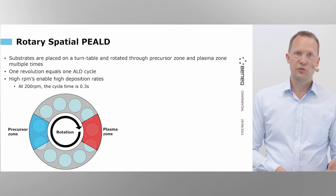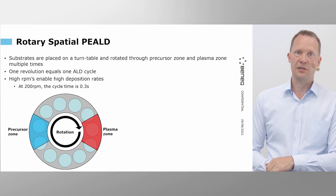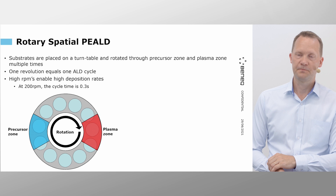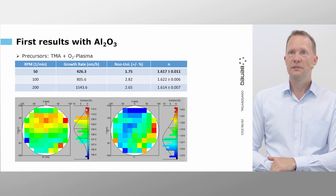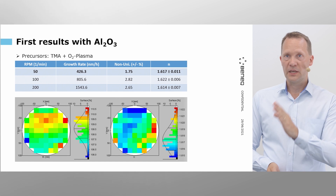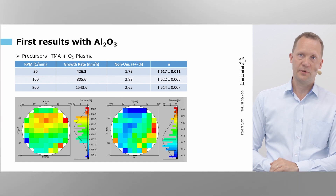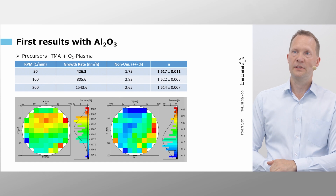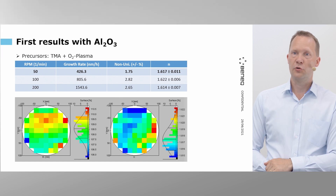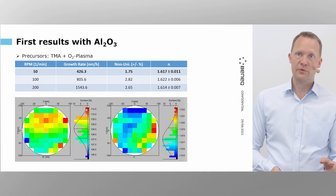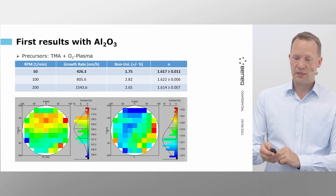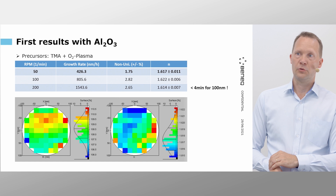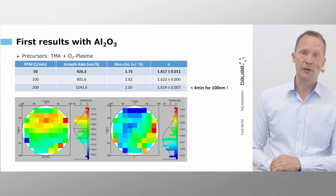As an example, at 200 RPM the ALD cycle time is 300 milliseconds. Some of the very first results with aluminum oxide show RPMs going from 50 to 100 and 200, with non-uniformity around 2% for the whole area. At 200 RPM we are at 1.5 microns per hour deposition rate, which in practice means it takes only less than four minutes to deposit 100 nanometers.